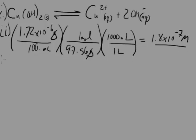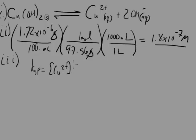Question III asks us to calculate the value of the solubility product constant Ksp for copper 2 hydroxide at 25 degrees C. Ksp for this salt is going to be equal to the concentration of copper ions times the concentration of hydroxide ions squared.